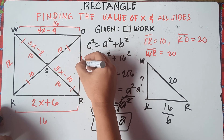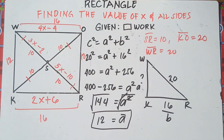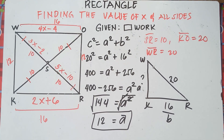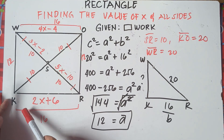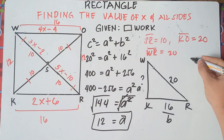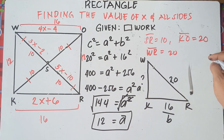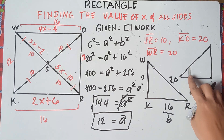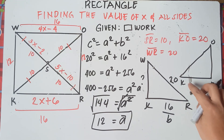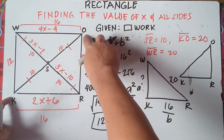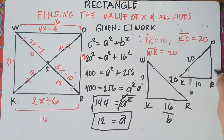Since WK is 12, OR should also be 12. So we found the value of all sides. It's easy, right? If the other side is not given, you can always use the Pythagorean theorem — for example, using triangle KOR with KO equals 20 and KR equals 16, same illustration applies.